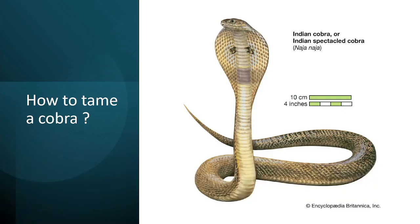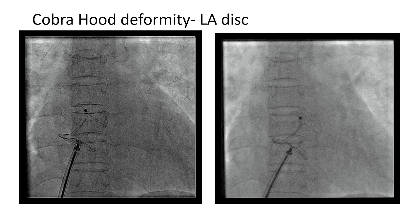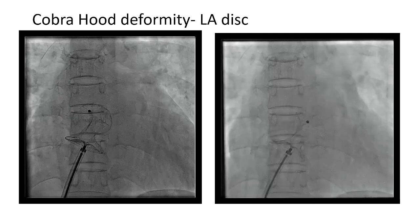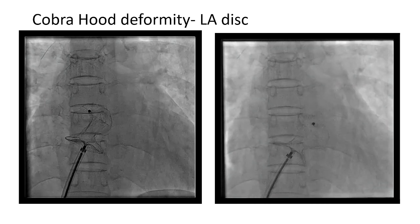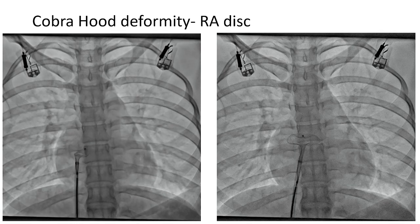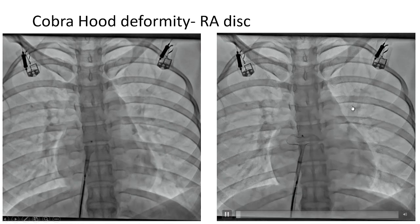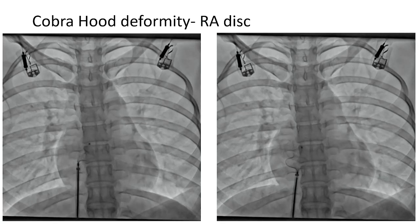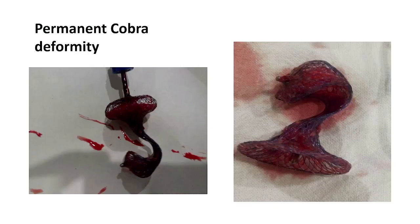Procedural complexity: sometimes there is cobra deformity. This is the LA disc cobra — we managed to tame the cobra by some jerking movement. This is the RA disc cobra, managed by some push and pull within the catheter. This is a permanent cobra deformity — I cannot manage it; I have to pull it out through the sheath. This is a permanent deformity of the device.